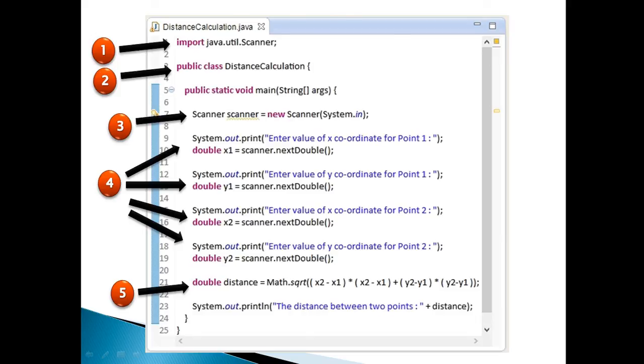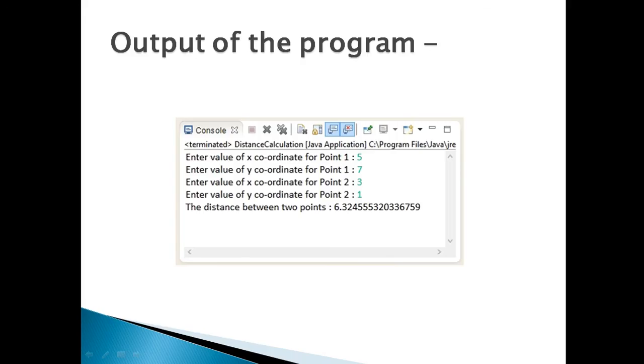Let's move ahead and run the program. It prompts user to enter values of x1, y1, x2, and y2. Let's say user enters values as: x1 = 5, y1 = 7, x2 = 3, and y2 = 1. After taking user inputs for x1, y1, x2, and y2, it calculates distance between two points and prints it on console as 6.3245.